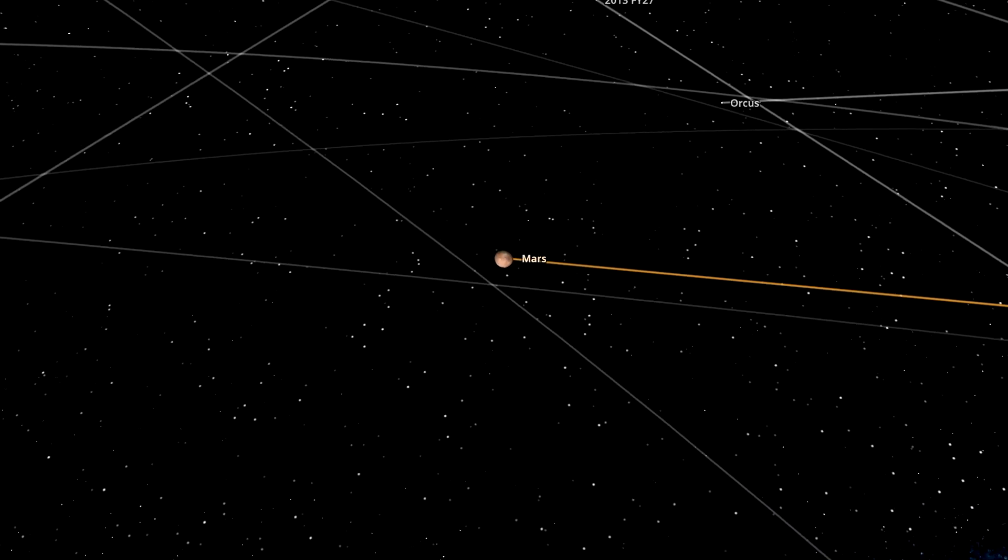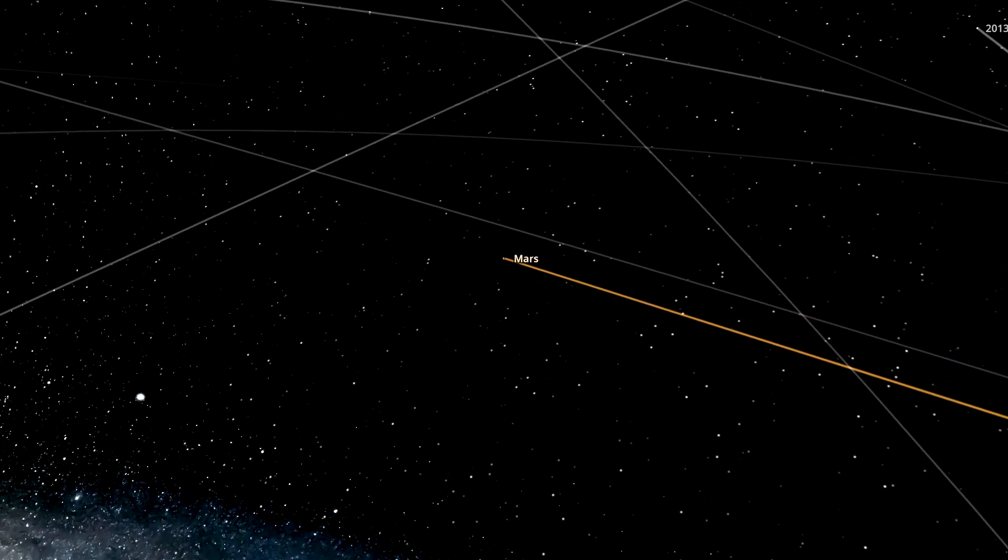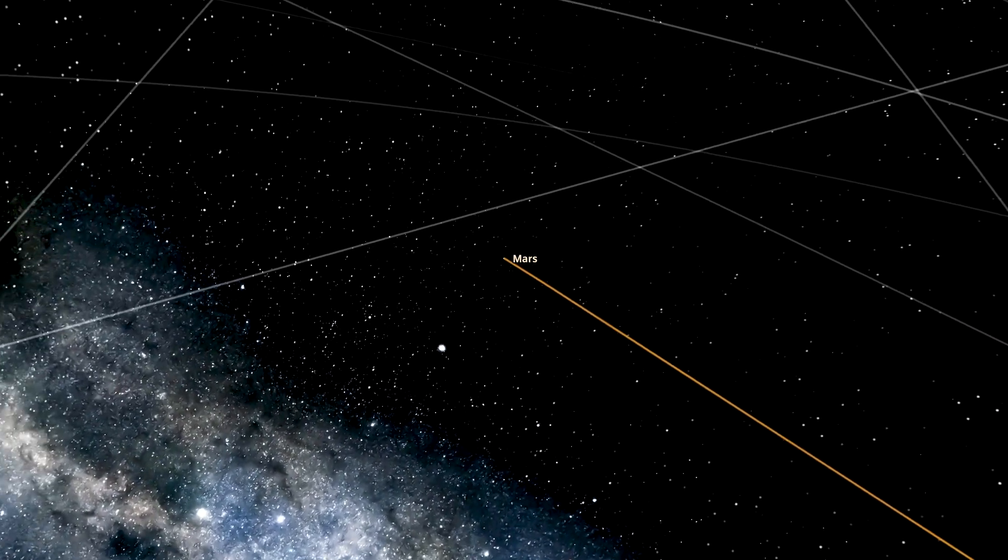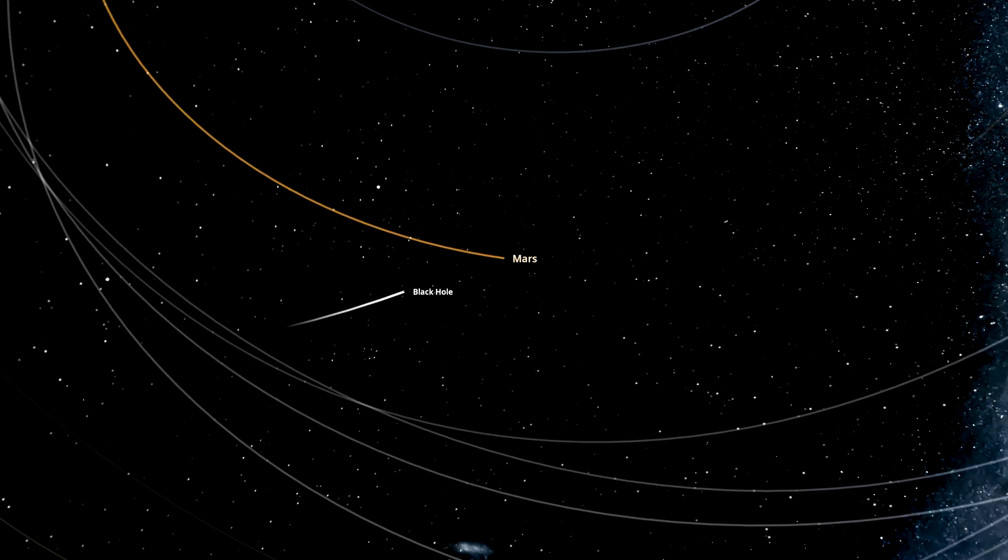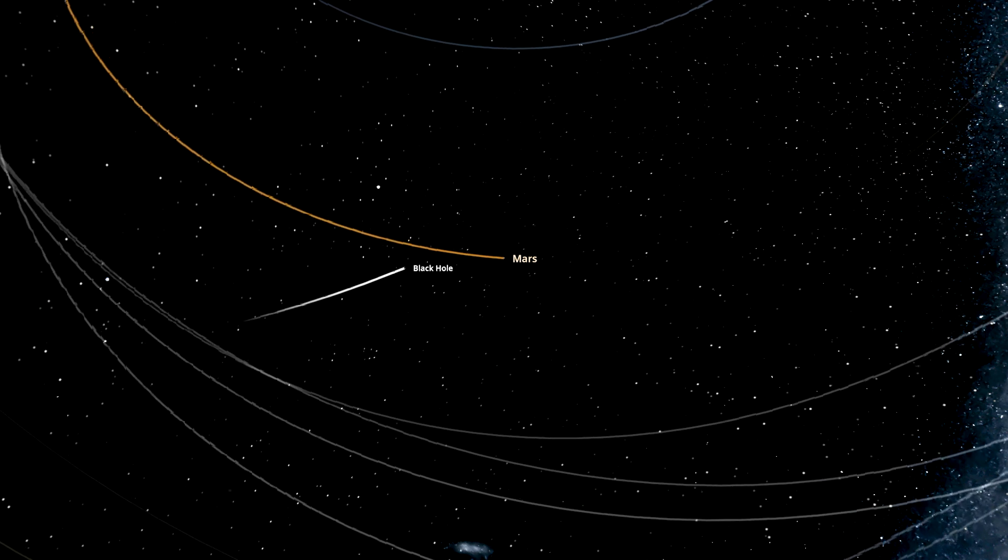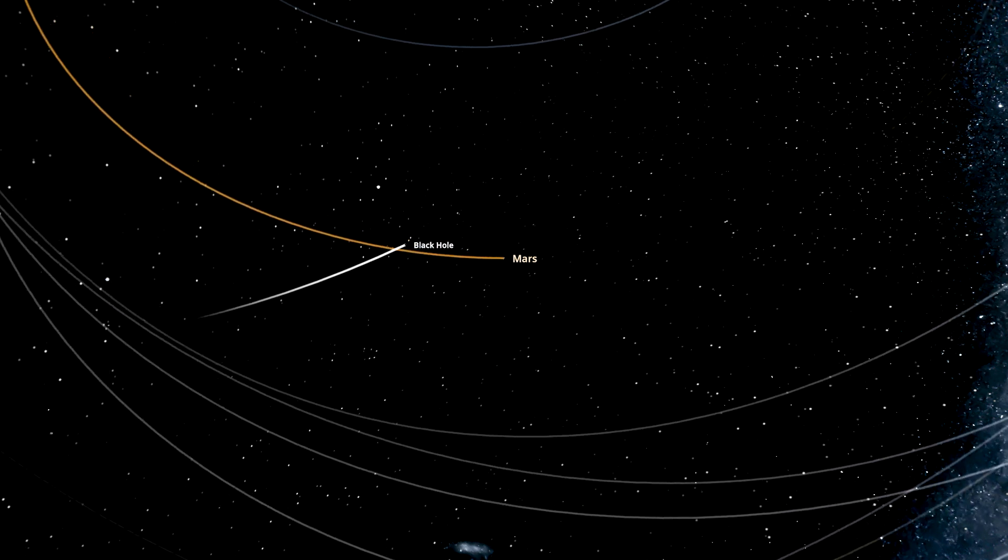We've been tracking Mars' position in orbit with extreme precision for decades, down to just a few inches. If a primordial black hole passed through our solar system, its gravitational pull would be strong enough to cause a tiny wobble in Mars' orbit.